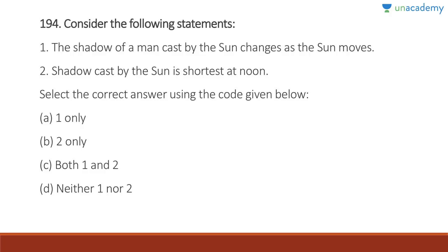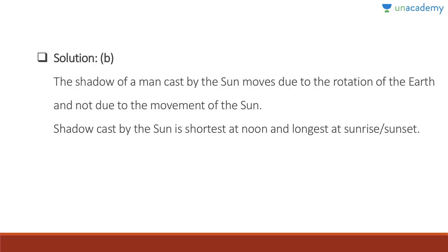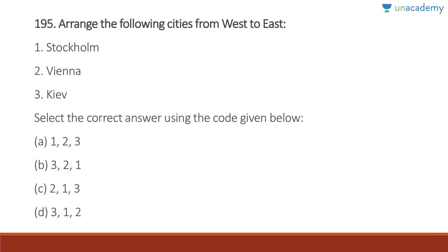Question 194: The shadow of a man caused by the sun changes because the sun moves — wrong; it is due to the rotation of the Earth, not the movement of the sun. The shadow cast by the sun is shortest at noon and longest at sunrise and sunset — correct. Answer is B, two only. You can experiment yourself: if the sun is overhead your shadow is very small, but at sunrise or sunset your shadow is very long.